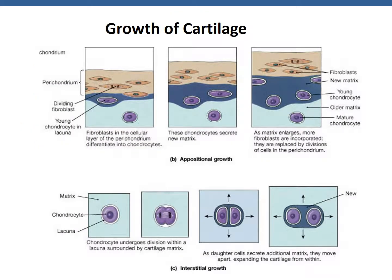Cartilage grows in two main ways: appositional growth and interstitial growth. Appositional growth occurs in cellular layers like rings of a tree. Growth occurs as a result of the mesenchymal stem cells in the cellular layer of the perichondrium. These cells differentiate into chondroblasts, which produce matrix. These cells are eventually surrounded by the matrix and become adult chondrocytes. Appositional growth results in adding additional layers of tissue, as we can see those cells differentiating from the perichondrium, starting to exude matrix and thicken over time.